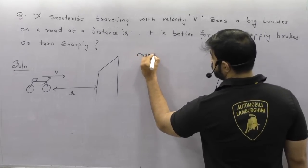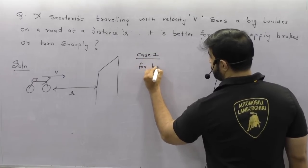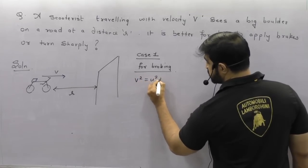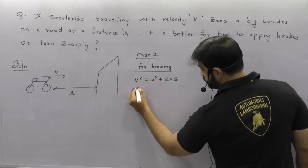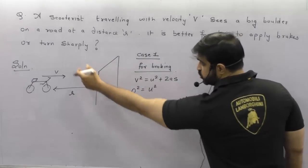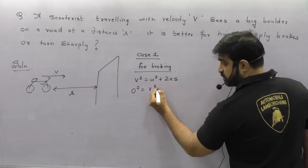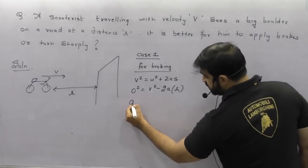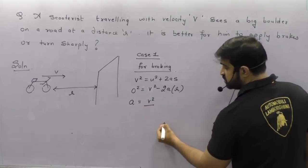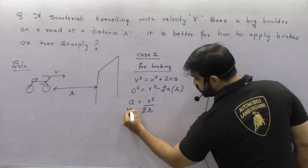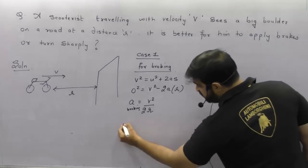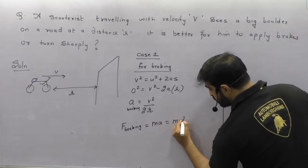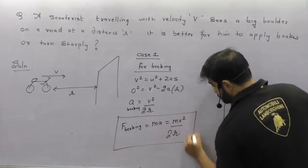We will take two cases. Case 1 — for braking: his final velocity should be 0. Using V² = U² + 2AS: final V is 0, U is the given velocity V, and distance S is R. So the acceleration during braking = V²/2R. Therefore the force for braking = MV²/2R.